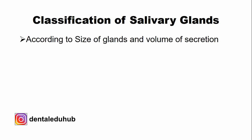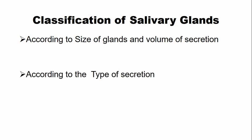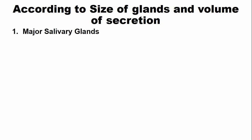The salivary glands are classified according to the size of the gland and volume of secretion. The second way in which the salivary glands are classified is according to the type of secretion. Let's first discuss classification according to the size of glands and the volume of secretion.